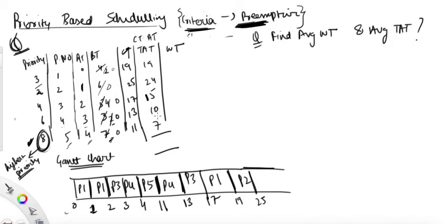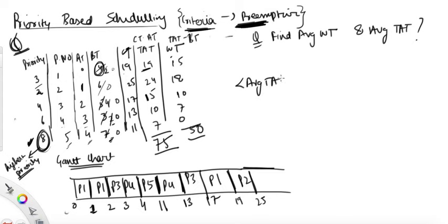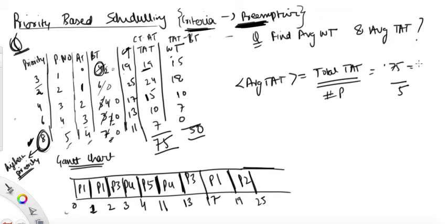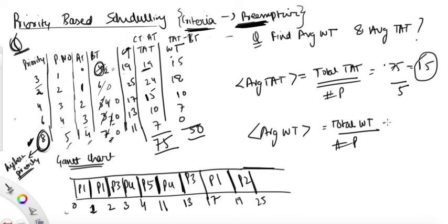Is this correct? Yes, this is correct. The total TAT is 75, so the average TAT comes out to be 75 divided by the number of processes, which is 5 — so average TAT is 15. Average waiting time equals total waiting time divided by number of processes. The total waiting time is 50 divided by 5, which comes out to be 10.